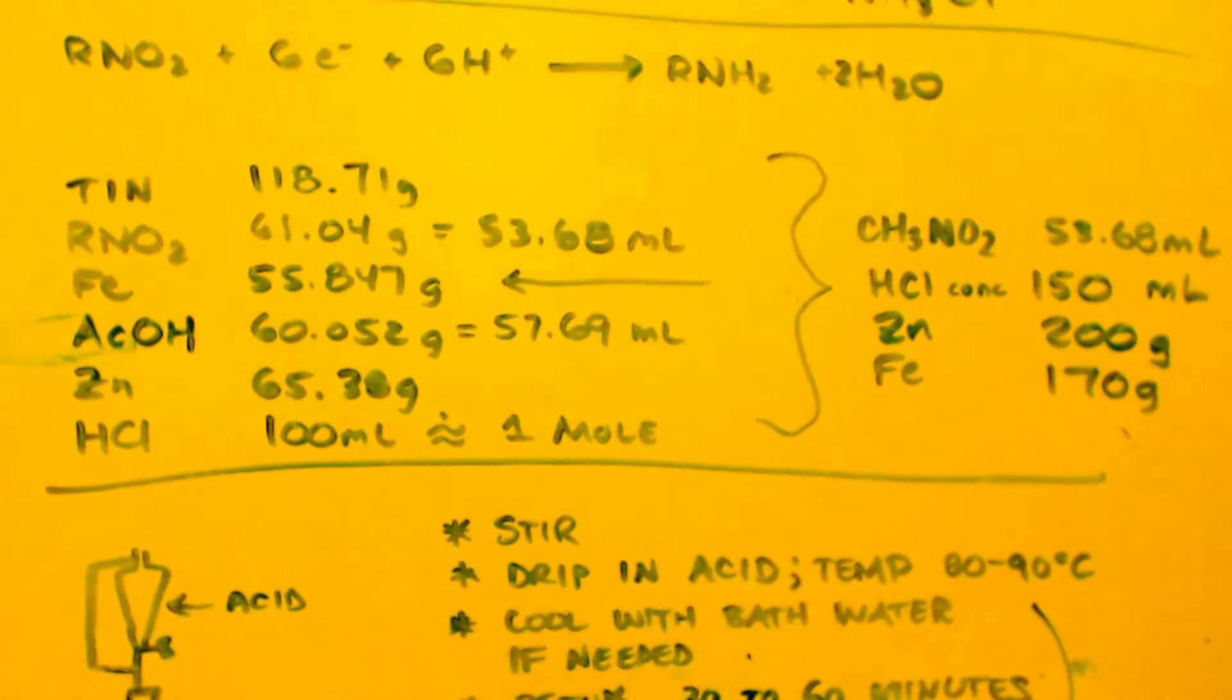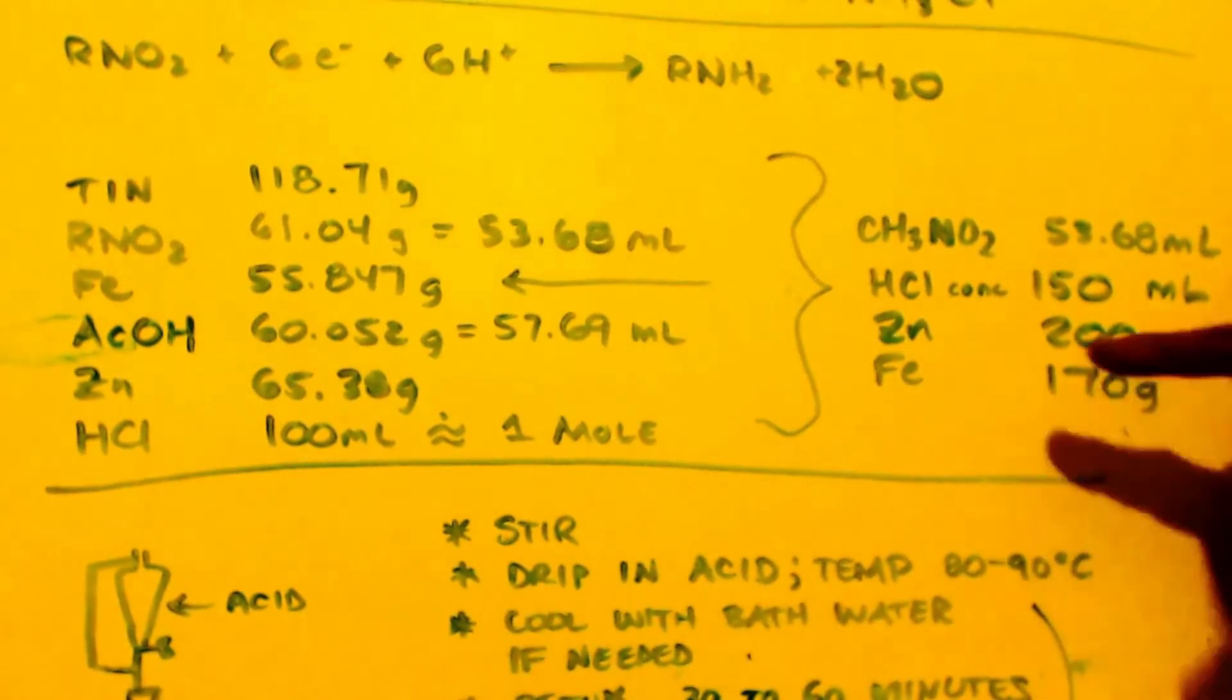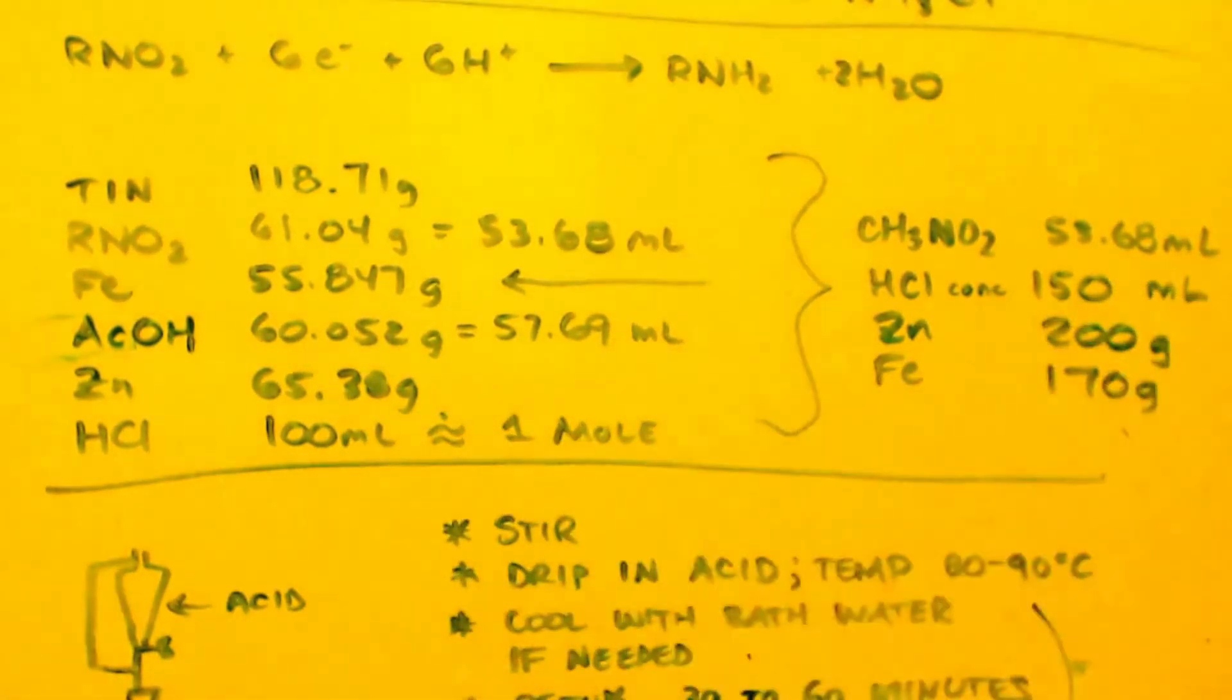Now, in my example, I'm going to use one mole of nitromethane, which is 53.68 milliliters. I'm going to use concentrated hydrochloric acid or whatever they have at the hardware store, which is usually 32, 32 and a half percent, and that's usually about 100 milliliters, just like a mole, maybe a mole and slightly more than a mole, but it's close to a mole. So I'm going to use a mole and a half. 150 milliliters, about 100 of that is water. Only about 50 milliliters of that is hydrogen chloride.